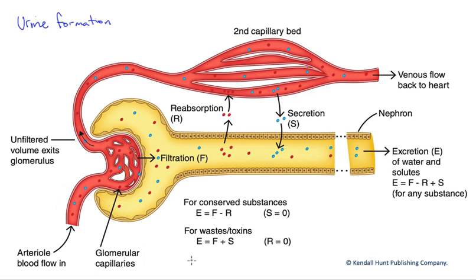There are about 1 million nephrons per kidney, so there's quite a few of these, and they're microscopic structures. We have a very interesting blood supply to the nephron, because we have two capillary beds in series — that's known as a portal system.